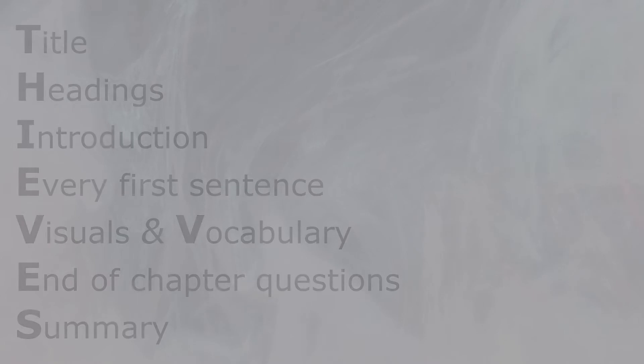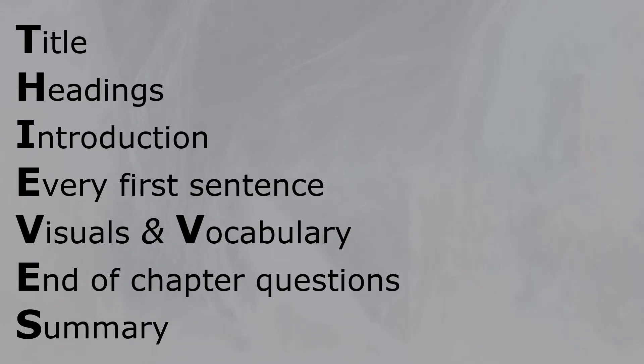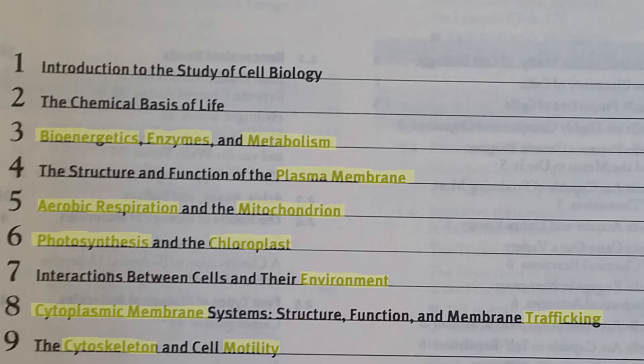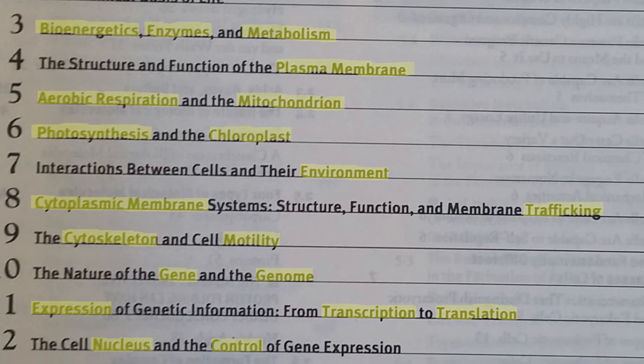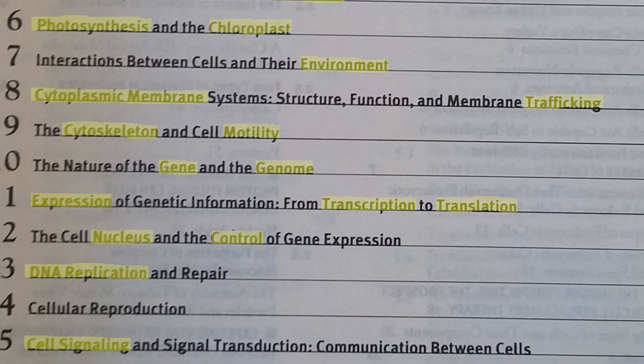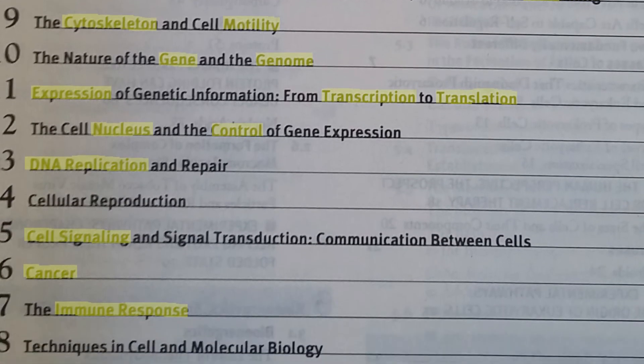Thieves stands for: Title, Headings, Introduction, Every first sentence, Visuals and Vocabulary, End of chapter questions, and Summary. Let's go through them one by one. Title is simply the title of the text you are reading. Headings means all the headings of the sections, chapters, and sub-chapters of the text. As I am looking at them, I am trying to find words which seem to denote important concepts about the topic.